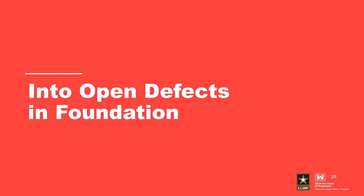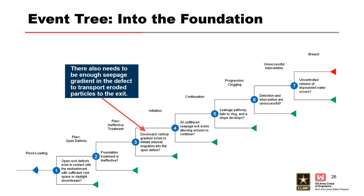Next, we'll discuss internal migration into defects in the foundation. Here's the event tree for evaluating internal migration into rock defects. Node 1 is the flaw node — an open rock defect exists in contact with the embankment with sufficient void space or that daylights downstream. Node 2 is a second flaw node — the foundation treatment is ineffective. Node 3 is initiation — a downward gradient exists; if the exit daylights downstream, sufficient gradient must also transport particles to the exit. Node 4 is continuation — an unfiltered exit exists. Node 5 is progression — the leakage pathway fails to clog. Node 6 is intervention — detection and intervention are unsuccessful. Node 7 is breach — uncontrolled release of impounded water occurs.